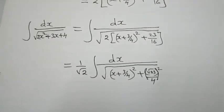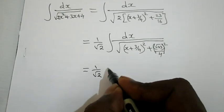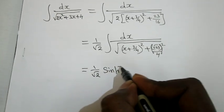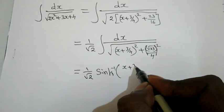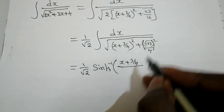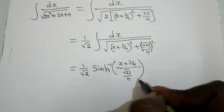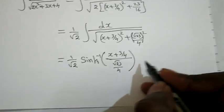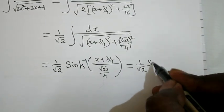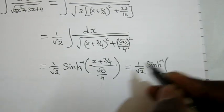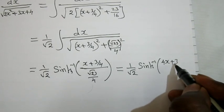Applying sinh inverse of x by a: the answer is 1 by root 2 times sinh inverse of x plus 3 by 4 divided by root 23 by 4. Here x corresponds to x plus 3 by 4, and a corresponds to root 23 by 4.